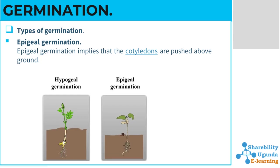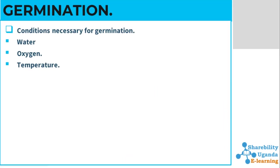Let us move on. There are conditions necessary for germination to take place. You don't just put a seed and it grows on its own — there are conditions that are necessary. Among them we have water, oxygen, and temperature. In higher temperatures like the desert the seed will not germinate, and in lower temperatures with a lot of coldness in the soil, germination cannot take place either.